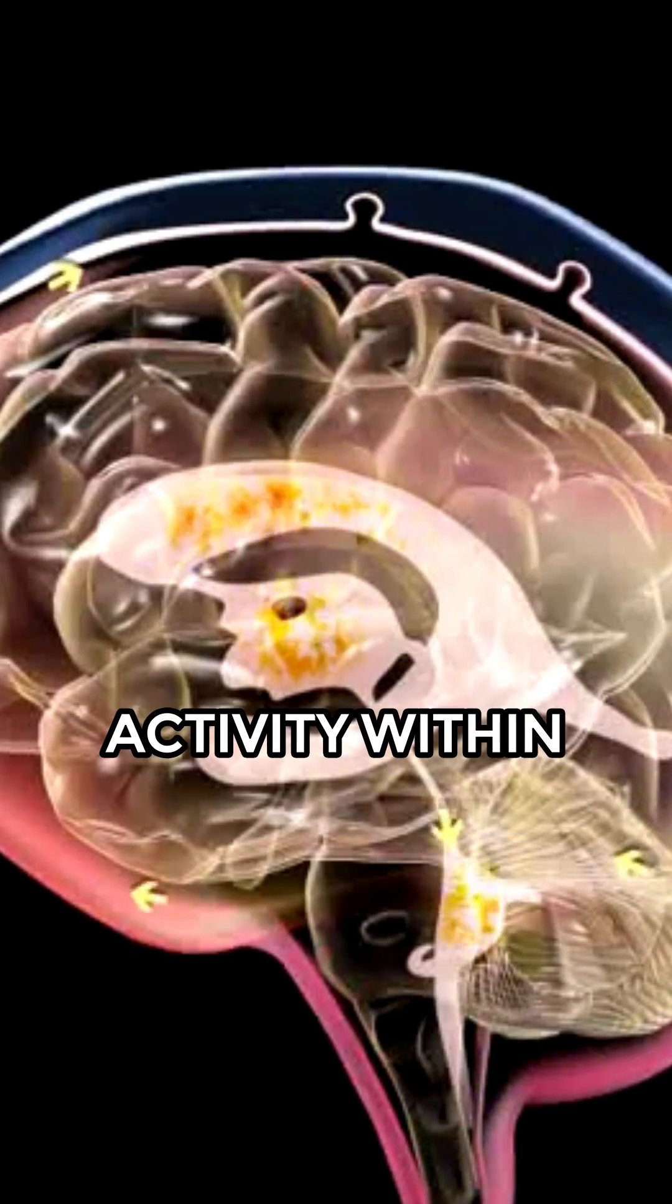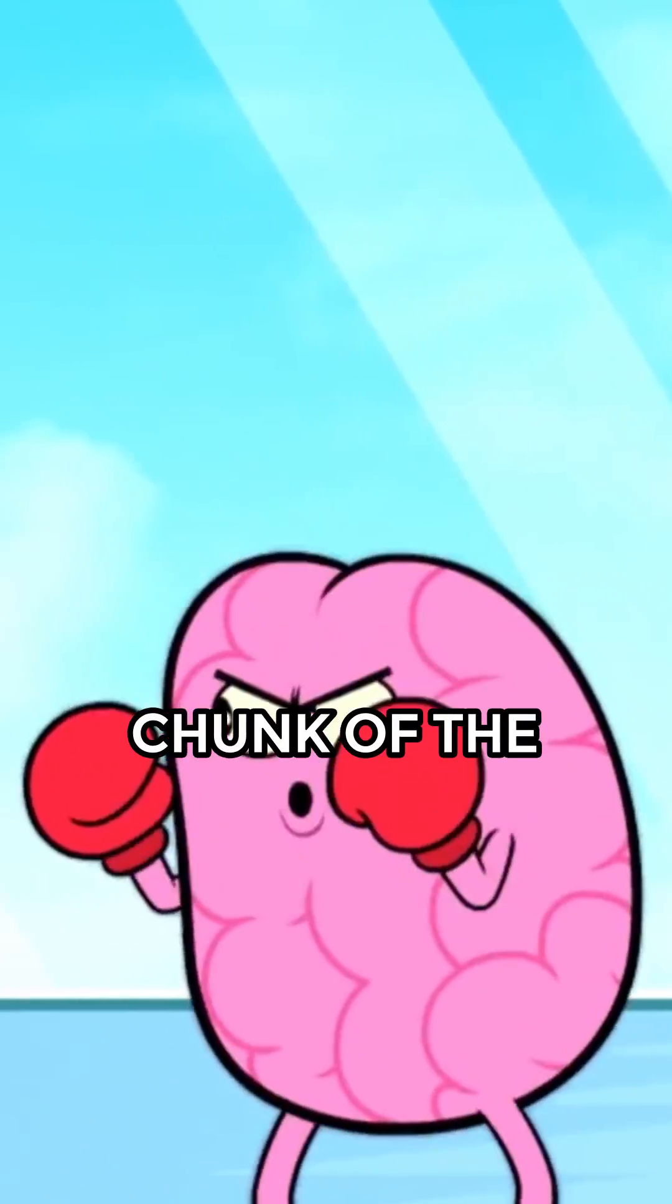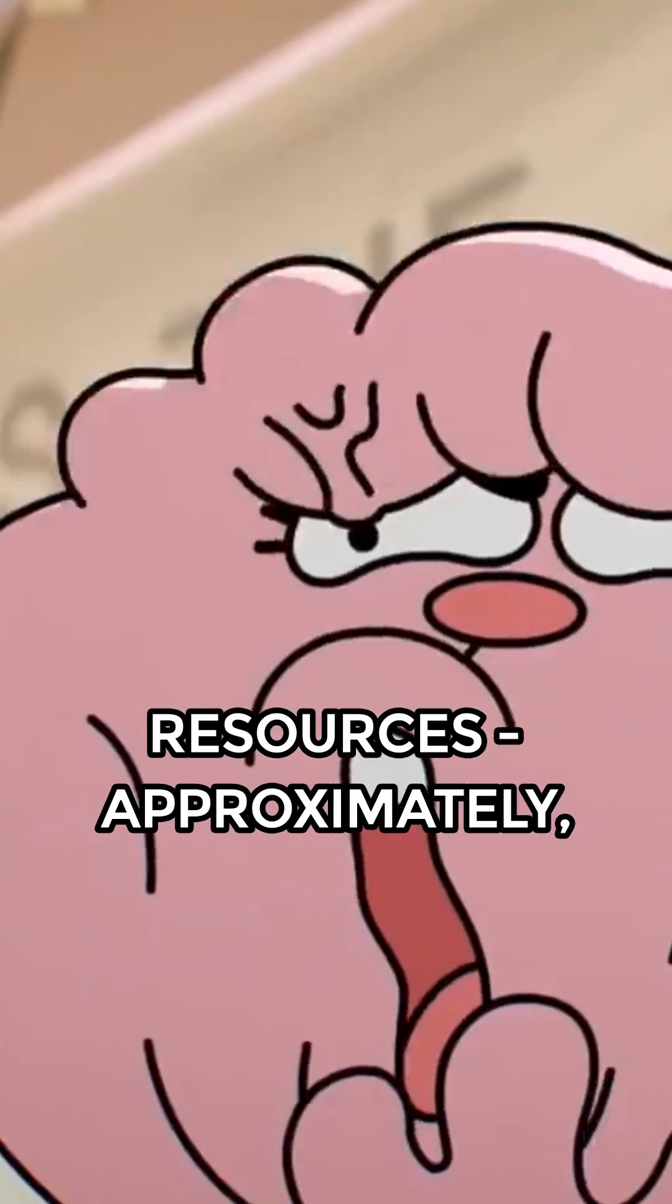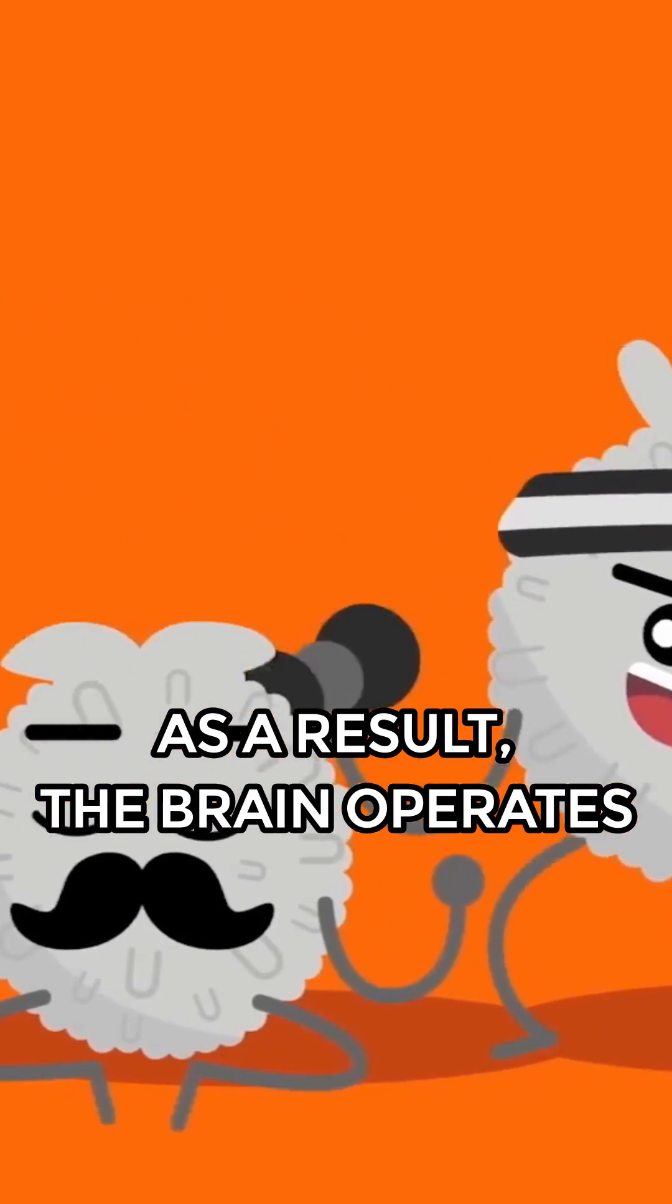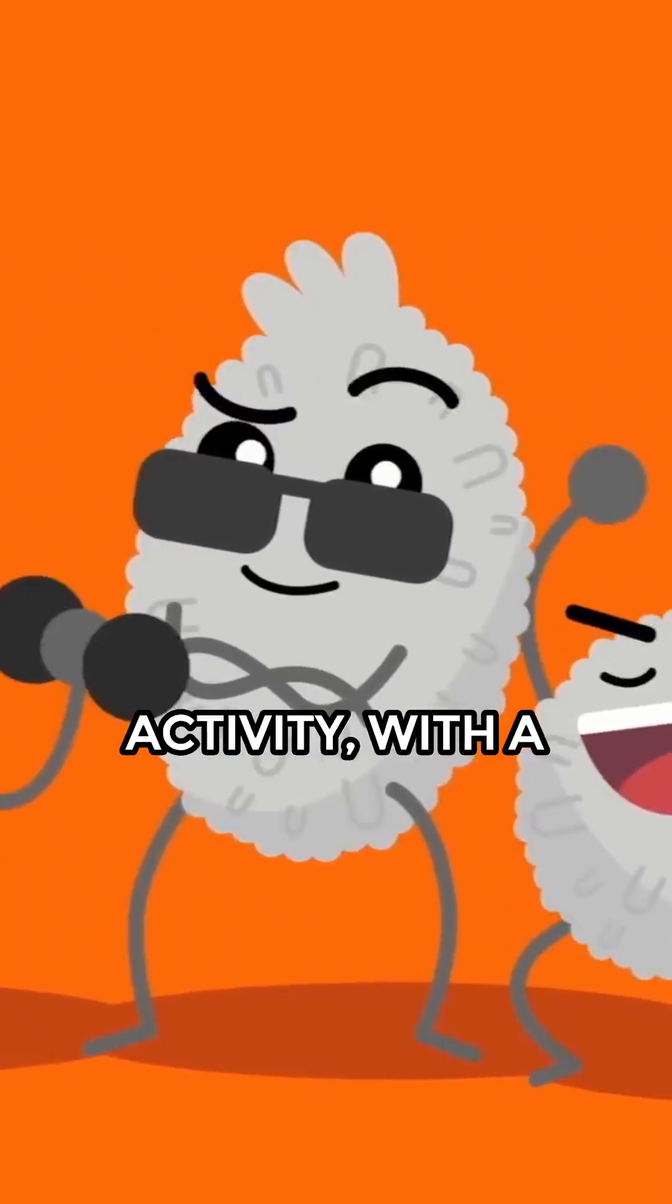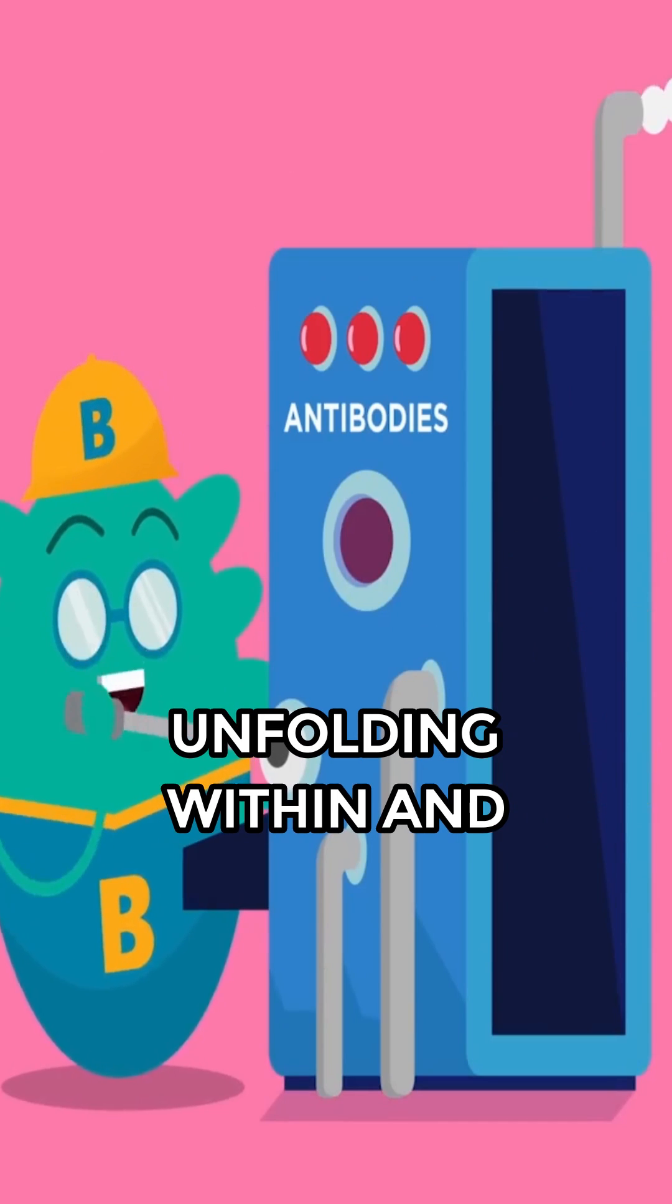It's crucial to grasp the sheer activity within the brain. This powerhouse of an organ demands a substantial chunk of the body's energy resources, approximately one-third merely to sustain its vital functions. As a result, the brain operates as a bustling hub of cellular activity, with a myriad of complex processes continuously unfolding within and between its cells.